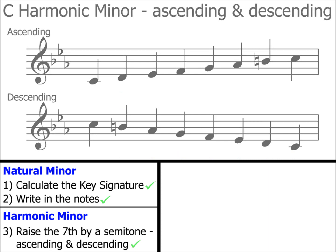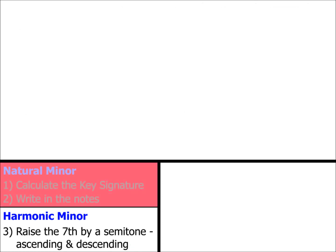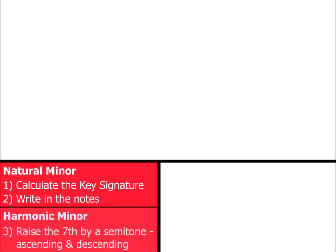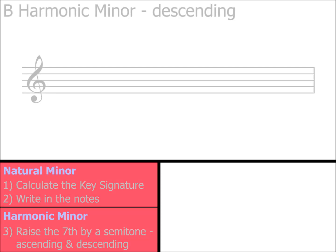So, in a nutshell, to create a harmonic minor scale, we first create a natural minor scale — steps one and two. We then raise the seventh note a semitone in both the ascending and descending versions of the scale.